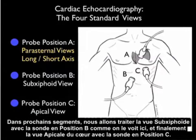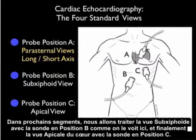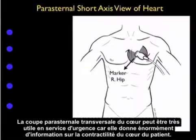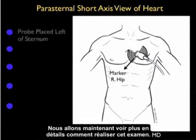In upcoming segments we'll cover the subxiphoid view as shown in probe position B, and finally the apical view of the heart as shown in probe position C. The parasternal short axis view can be very helpful in emergency care as it gives a great deal of information about the contractility of the patient's heart. Let's look further into how to perform this examination.